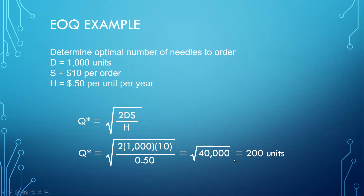For example, with annual demand D = 1,000 units, setup cost S = $10 per order, and holding cost H = $0.50 per unit per year, Q* = √(2 × 1000 × 10 / 0.50) = √40,000 = 200 units. So the optimal number of units to order is 200 units.